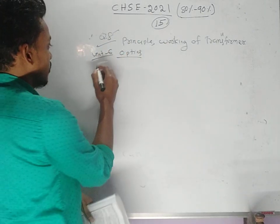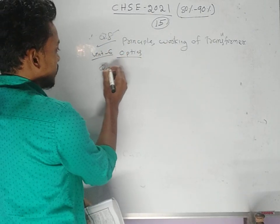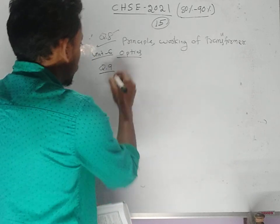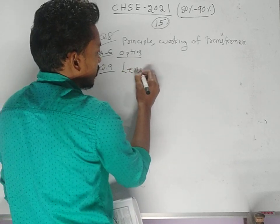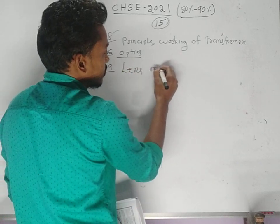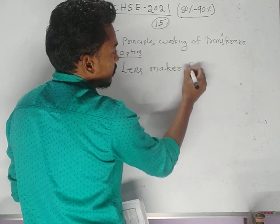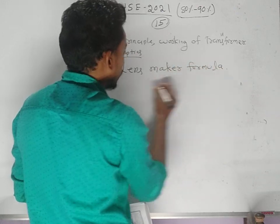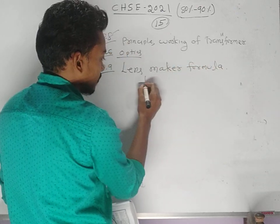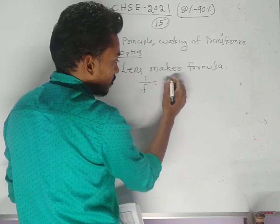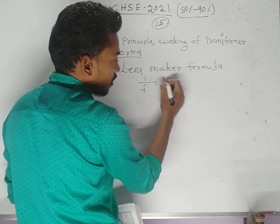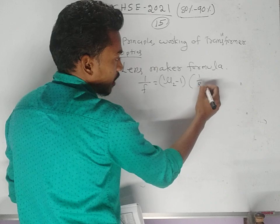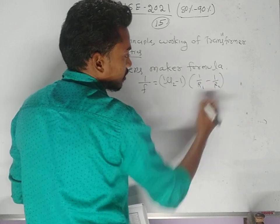Question number nine from ray optics: derive the lens maker formula — 1/f = (μ₂/μ₁ − 1)(1/R₁ − 1/R₂) — applicable to both convex and concave lenses.